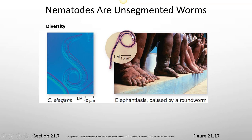This worm is Wuchereria bancrofti, but also Brugia malayi can cause elephantiasis. These are two different microfilarial worms where if you get bit by certain insects, the larvae or eggs of these worms can get injected into the tissues. The lymphatic system sucks up that egg from the tissues, and the egg will hatch and grow into a full adult-sized worm, or turn into larvae which then mature into the adult worm, blocking your lymphatic vessels.